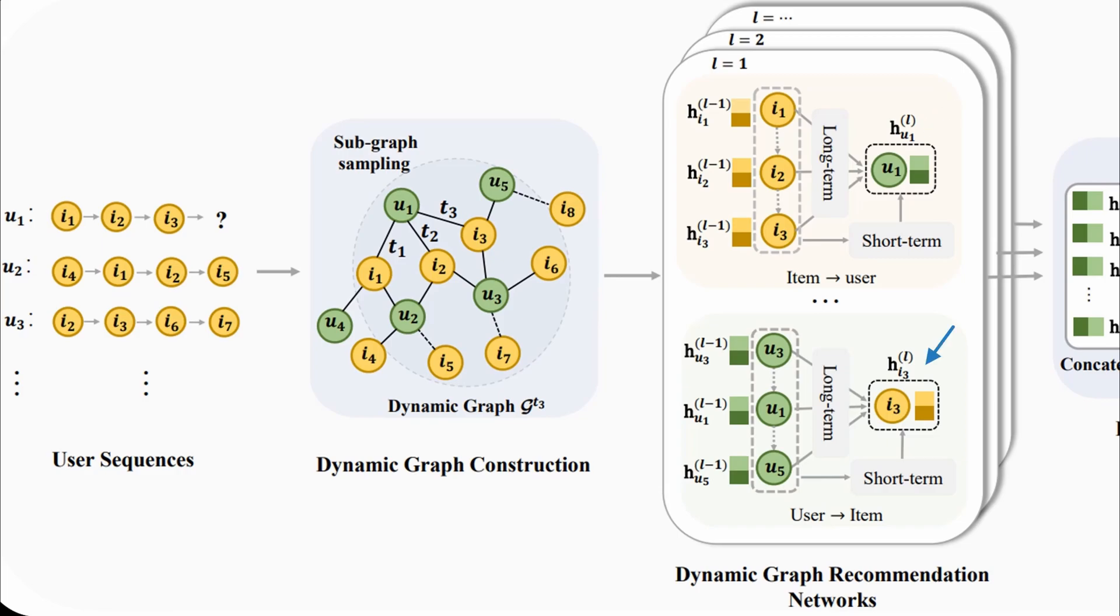In both cases the model learns long-term dependencies and short-term dependencies. The long-term dependencies are modeled with a gated recurrent unit and represent general characteristics of a node. The short-term dependencies represent the latest properties of a node and are modeled with an attention mechanism between the last interaction and all other interactions.